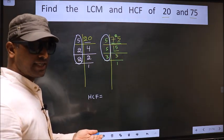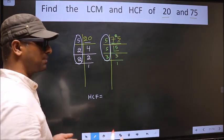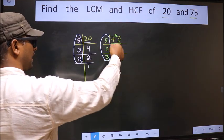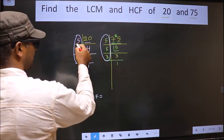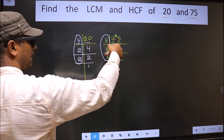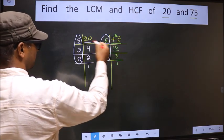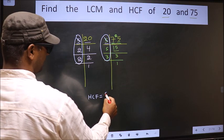So now let's find the numbers present in both. Starting with the number 5, do we have 5 here? Yes. So we mark 5 and write it here.